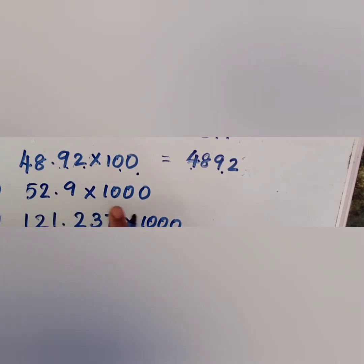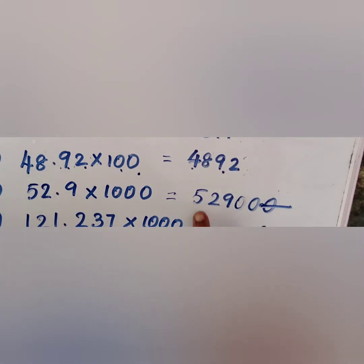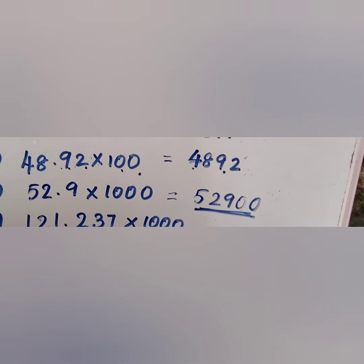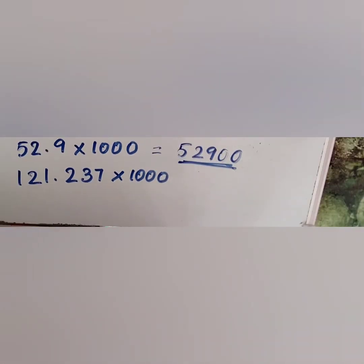Next question, 52.9 into 1000. Write 529 and add those three zeros. Now, check the decimal place. It is one place. So our answer is 52,900.